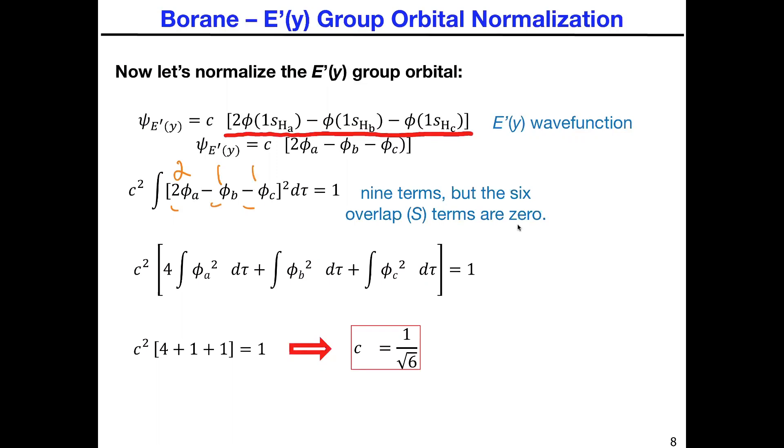When you come down to the next step where you have to square everything, those are going to become 4, 1, and 1. As you can tell without going through all the details with the integral signs, the 4, the 1, and the 1 all line up in here.